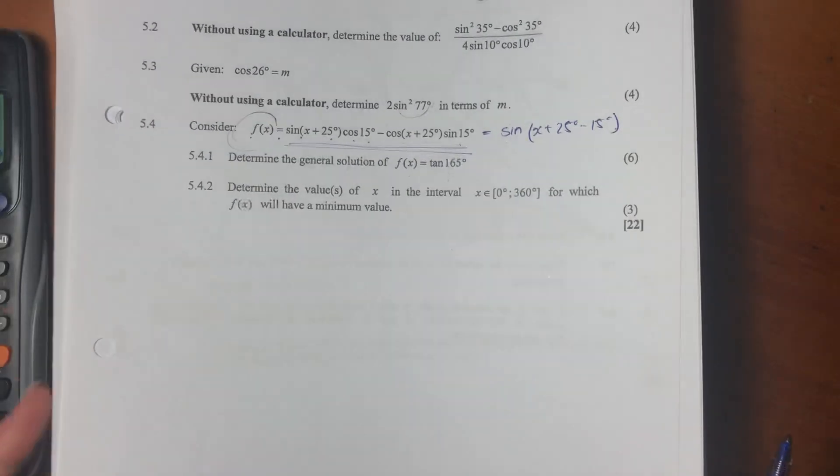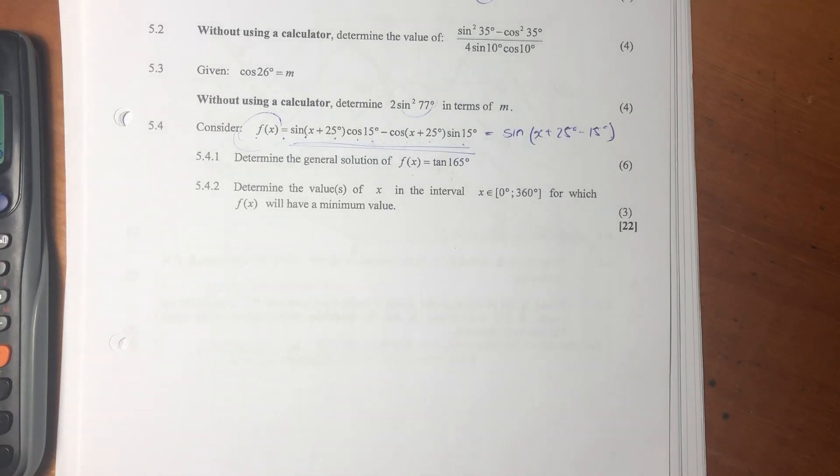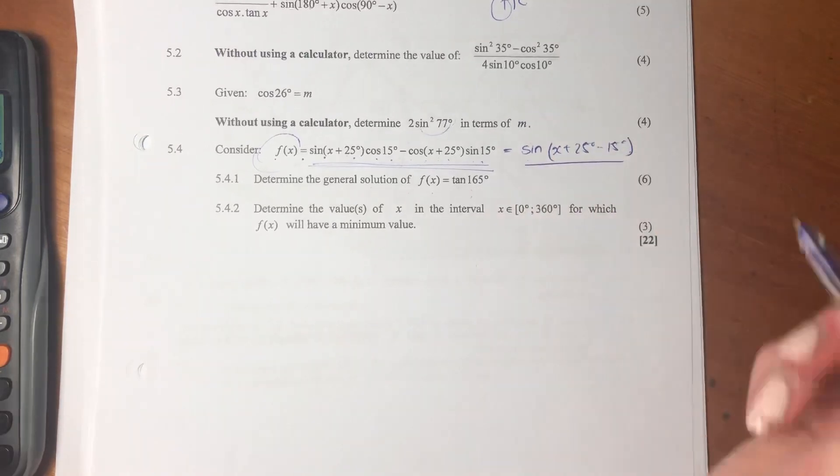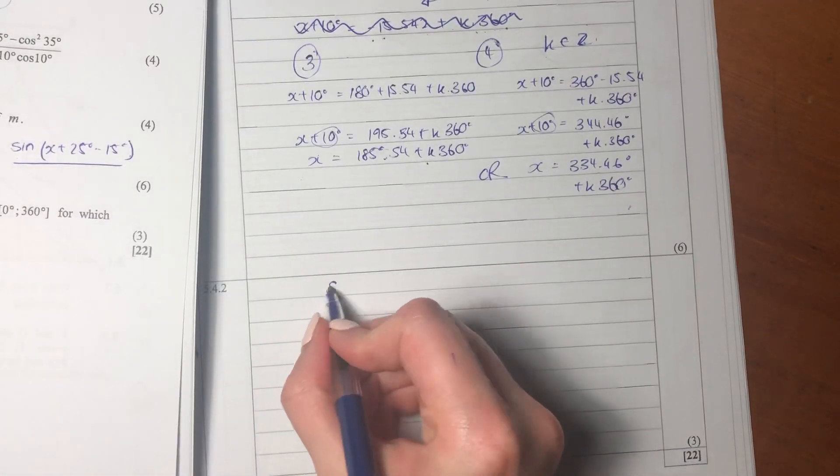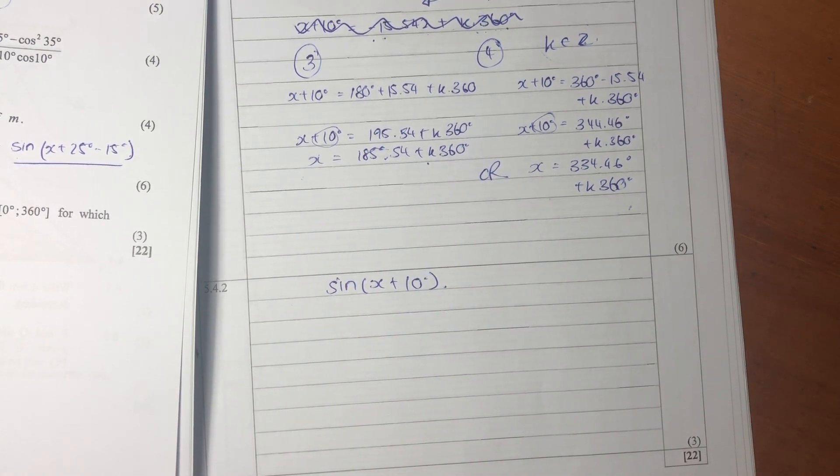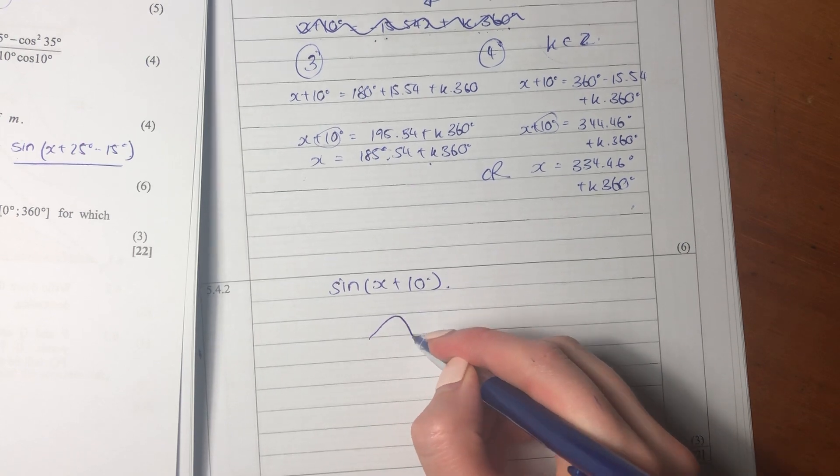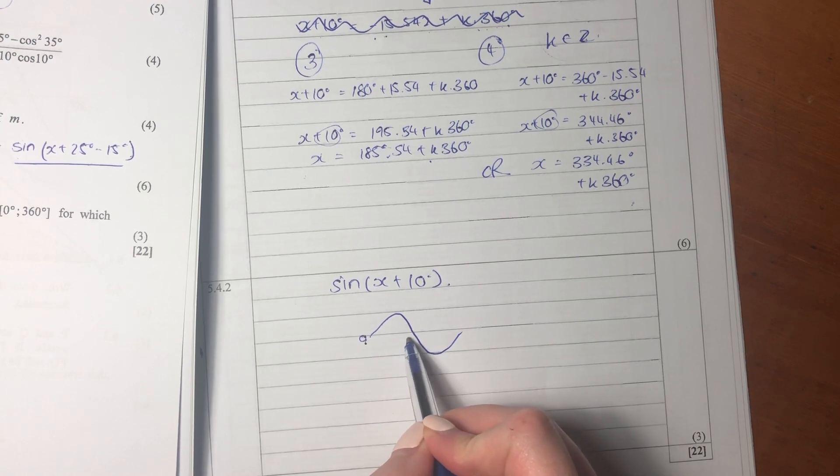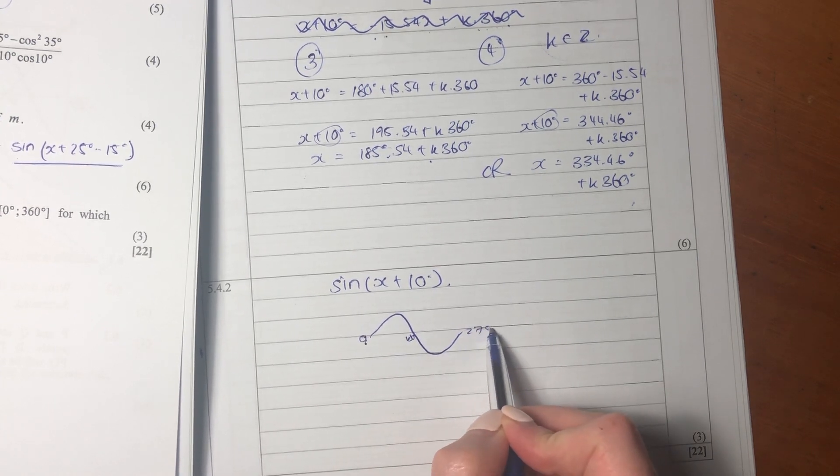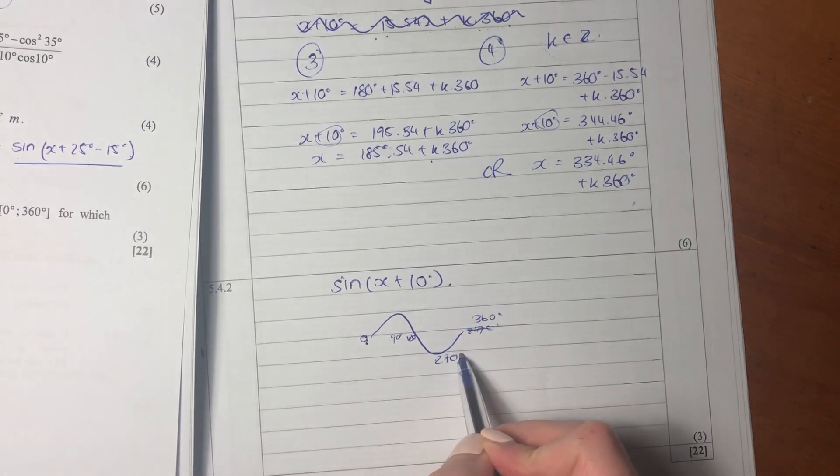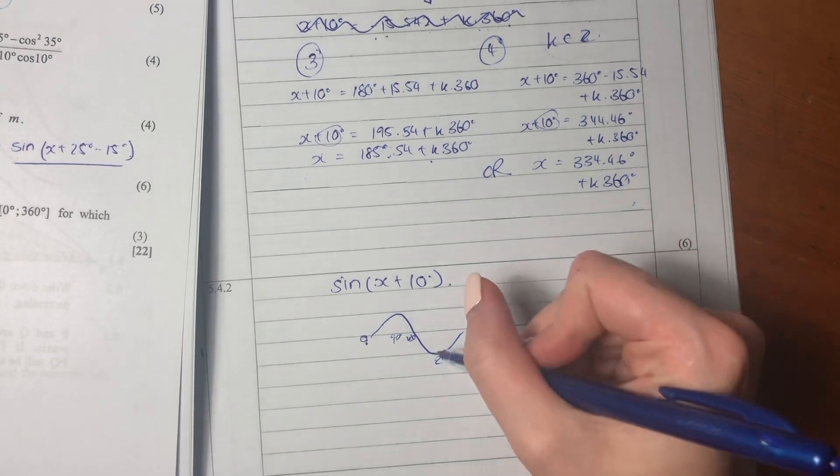Let's now move on to our last question. So 5.4.2 says determine the values of x in the interval zero to 360 for which f of x will have a minimum value. Now what's important is we're looking at sine x plus 10. When we look at the graph of sine, the graph of sine looks like this. That's zero, that is 180, and that is 270. That's 90, and that's 360. And this is 270 here. So its minimum value is generally at 270, because that's negative one, and its maximum value is at 90, which is one.